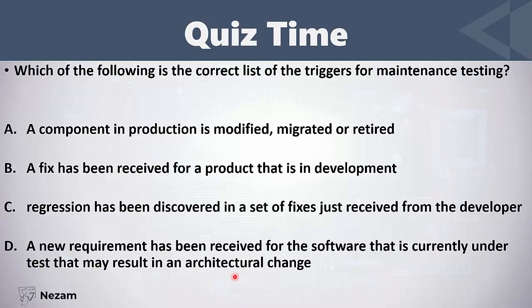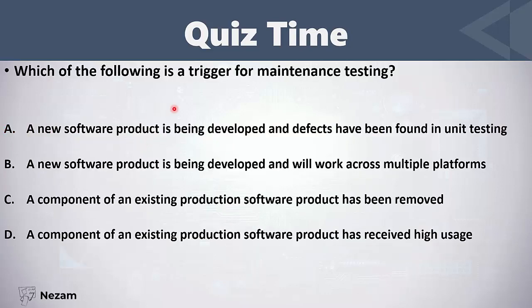'A new requirement has been received for the software that is currently under test, that may result in an architectural change' — this is also wrong because our system is still under test. So the first choice is the correct one. Now, which of the following is a trigger for maintenance testing?